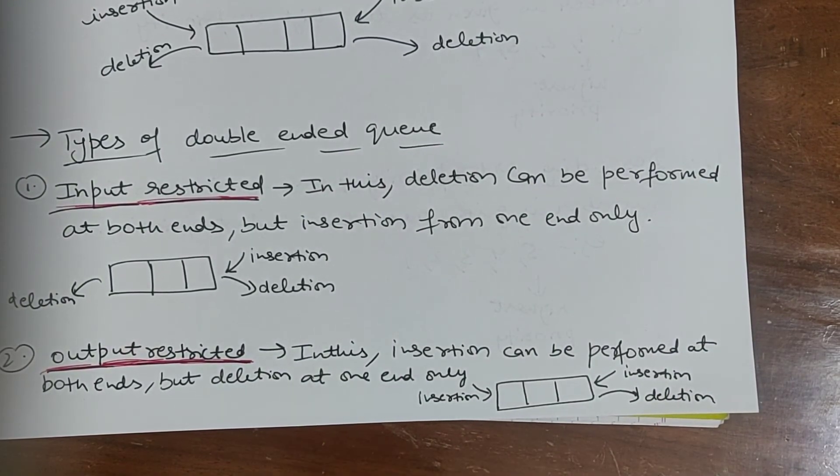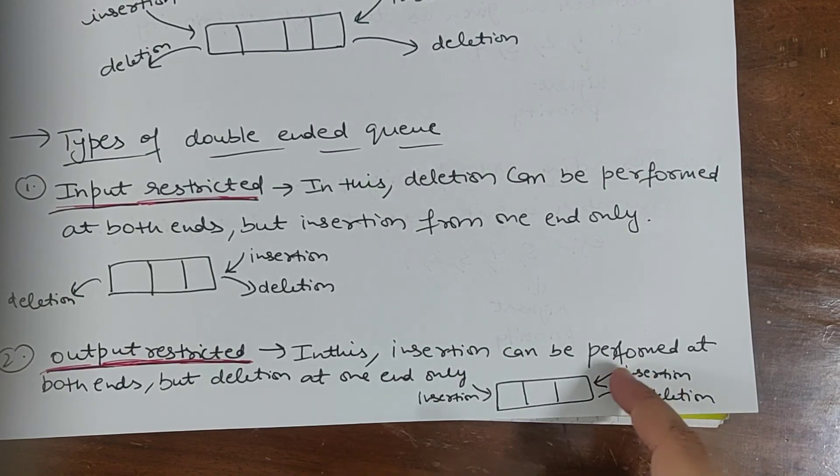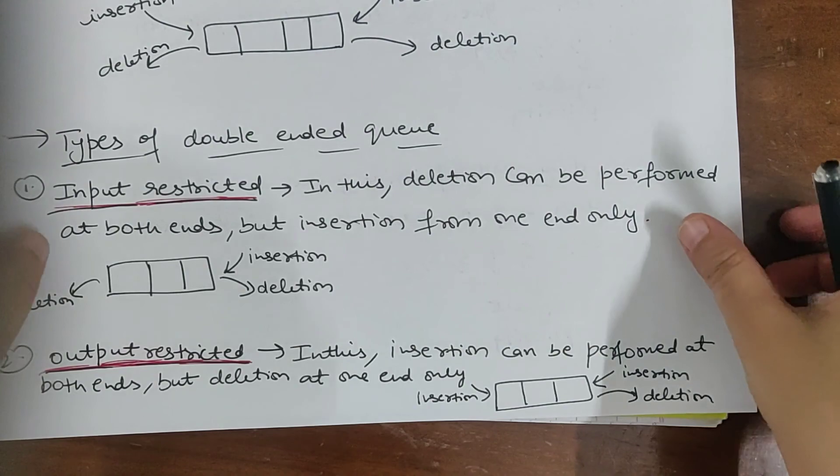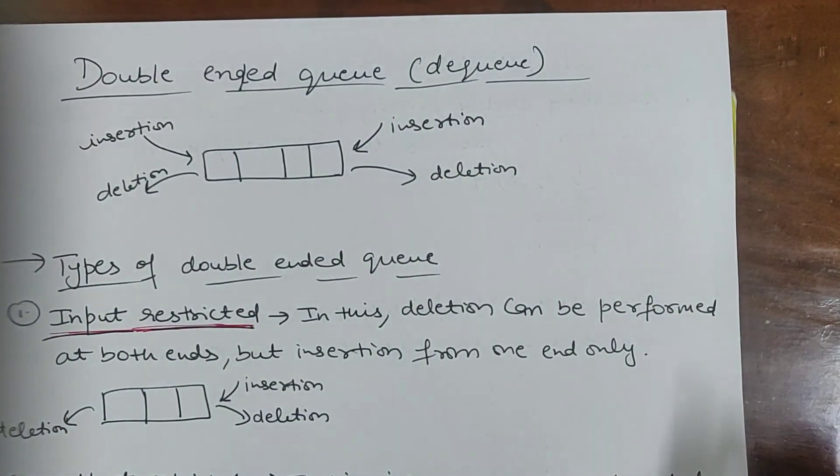Output restricted means insertion can be performed at both the ends but deletion from one end. Insertion is also happening here and deletion from one end. So this is all about double ended queue. Thanks for watching my video.